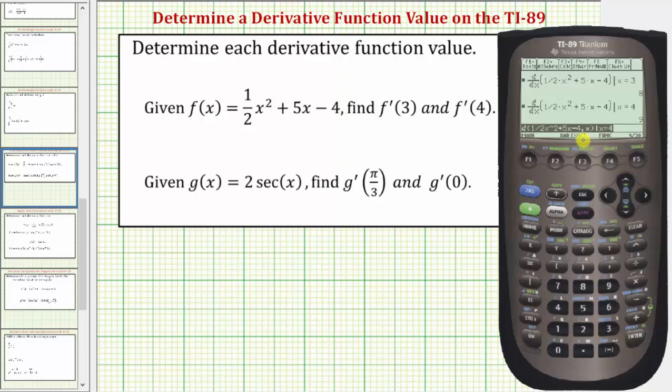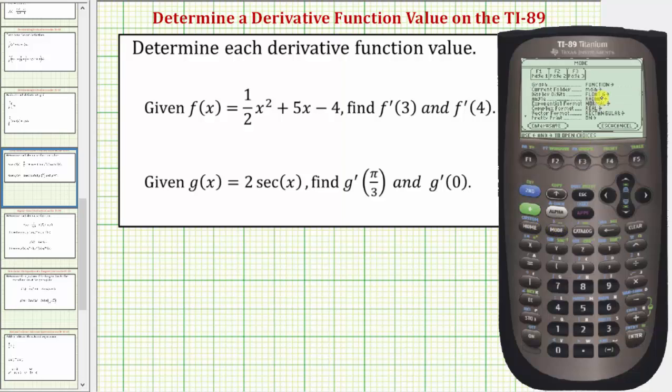but for review, to change the mode, press the MODE key. Notice the fourth row says RADIAN. If it didn't, arrow down to the fourth row, press the right arrow, highlight RADIAN, press enter, and then enter again.